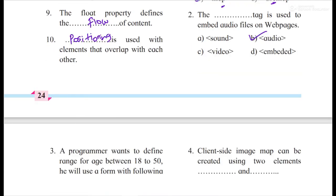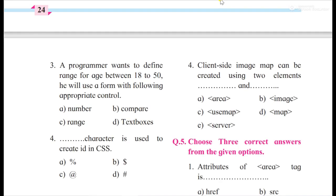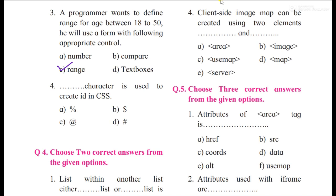Then a programmer wants to define range for age between 18 to 50. He will use a form with following appropriate control. A range, simple. Then the dash character is used to create ID in CSS. Yes, it is used like this, hash.